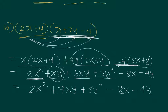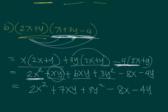That is the expanded form of (2x + y)(x + 3y − 4). If your expression is not in this exact order but all terms are present, that can be considered correct. Try to arrange terms in descending order of exponents — starting with 2x squared, then xy, then y squared, then x, then y.